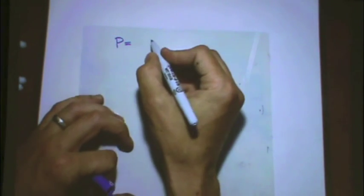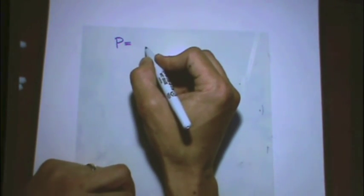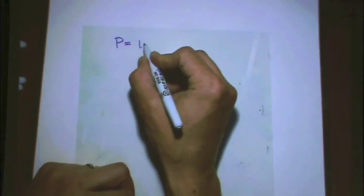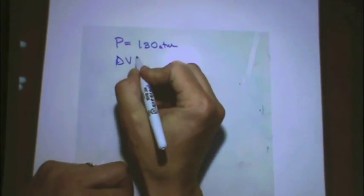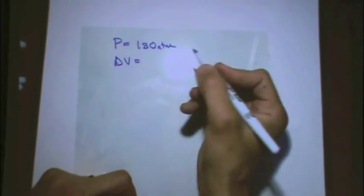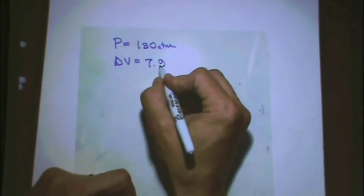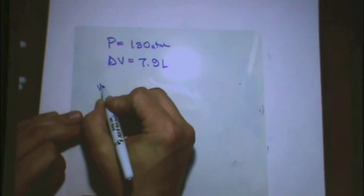Now, you are given a pressure, 1.30 atm, and a change in volume of 7.9 liters. And sometimes you'll see the term external pressure, that means pressure from the outside, or you just see the word pressure. In this case, if they ask you to find work, then obviously you would use this.